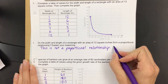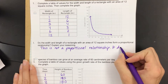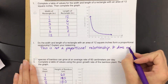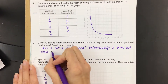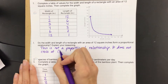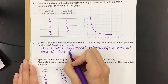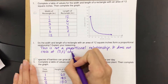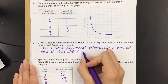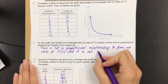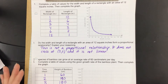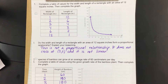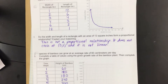It does not cross at the origin (0, 0), and it is not linear. You guys good on that one? Awesome. Now this next one.